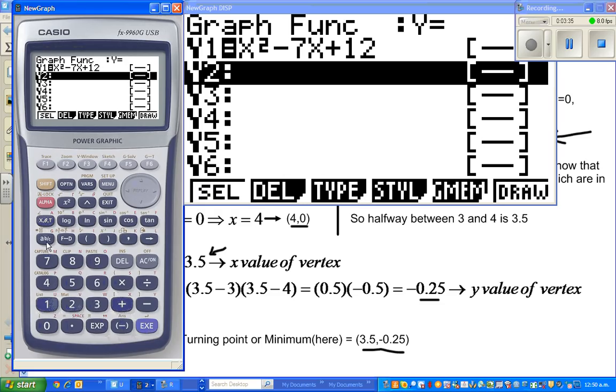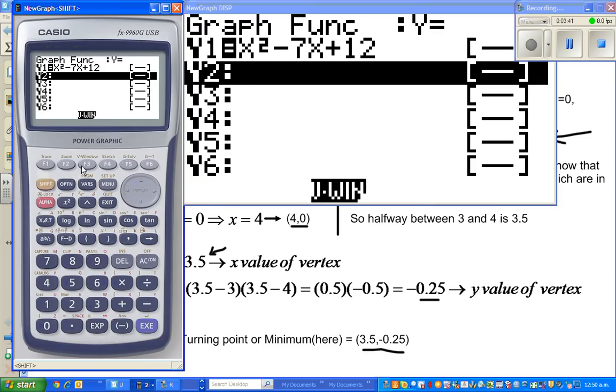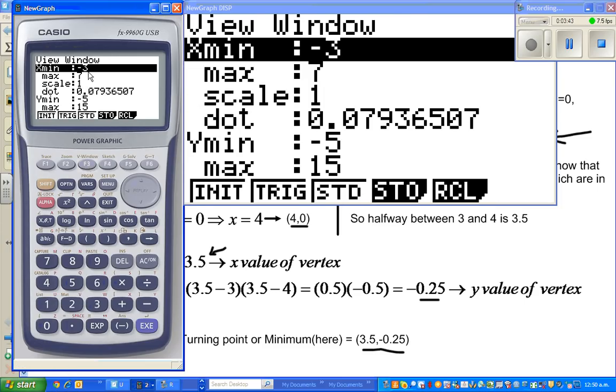Then always check your settings or your scale by pressing shift F3, which will give you the scale. The scale that I have taken for x's: x minimum is negative 3 to 7. You can take whatever scale is necessary. This is appropriate in this situation, so a scale of 1.